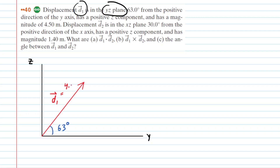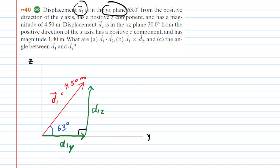What we want to do is figure out the components of vector D1. Specifically, we're going to find the Y component, which runs along the positive horizontal axis — we can call that D1Y. The vertical component runs up the positive Z axis, so we label that D1Z. We can start by finding D1Y. Notice this is a right triangle, and D1Y is adjacent to the 63 degree angle, while D1 is the hypotenuse.